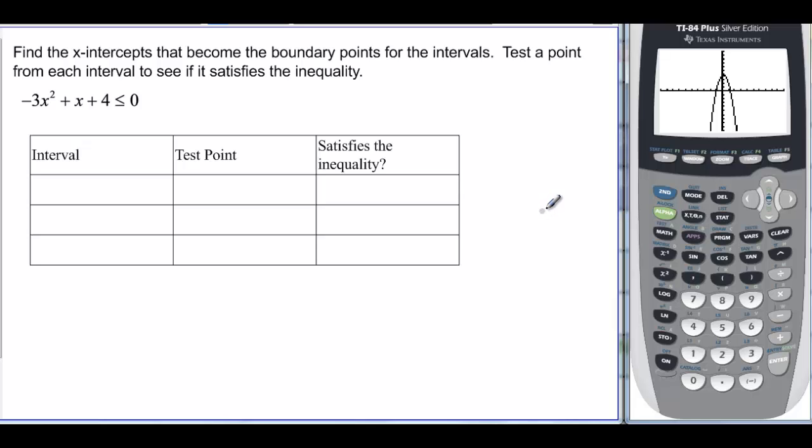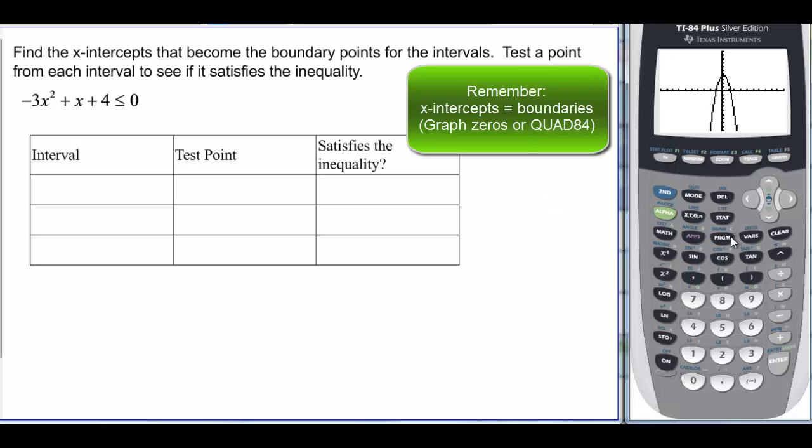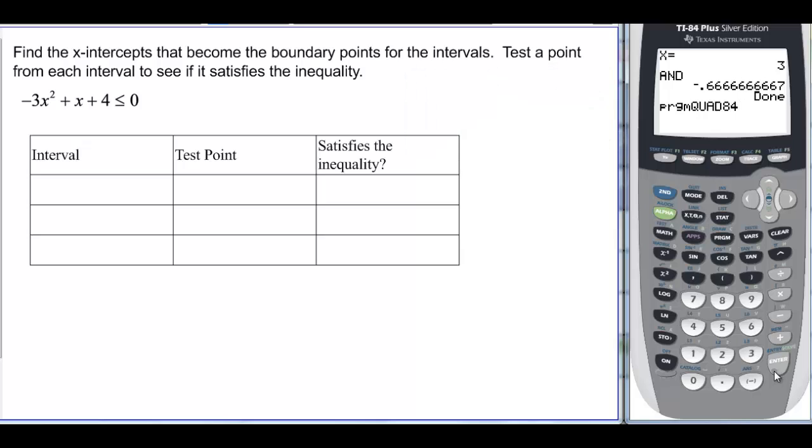Okay, well it's going to be really important that we know what those x-intercepts are, but we could use a quadratic formula to help us figure out what those are. Remember, that tells us, gives us the values that we want. So the quadratic formula is what I want. A is -3, coefficient on x squared. B is 1, coefficient on x. And C is 4, the constant.